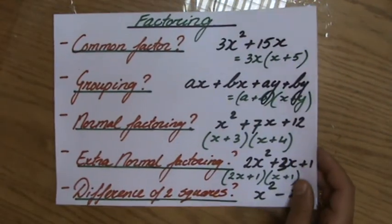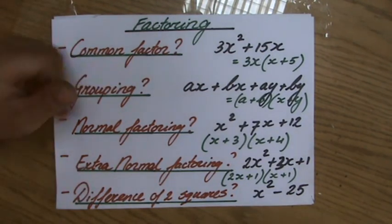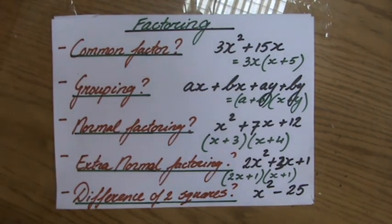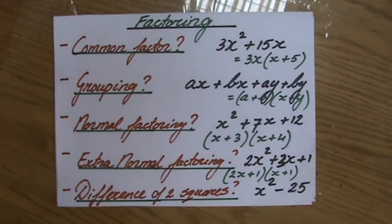Okay, so guys, we have one left, and that is a beautiful one: the difference of two squares. Is there a common factor? Can I do it by grouping? Is it normal factoring? We've just done what I call the extra normal factoring. Now the difference of two squares - it's the one you encounter loads of times. So it's an easy one. I think it's easy and it's beautiful, it's beautiful. So see you at the next video. Bye bye.